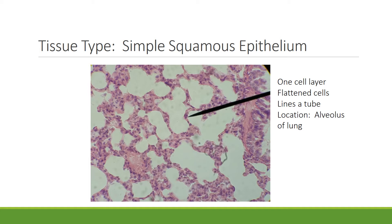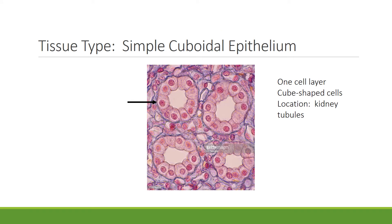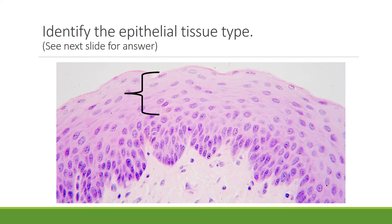One location of simple squamous epithelium is the alveolus of the lung. Can you identify the next type of epithelial tissue? The answer is on the following slide. This is simple cuboidal epithelium — simple because it's one cell layer, cuboidal because the cells are cube-shaped, and the location is kidney tubules. Can you identify the next type? The answer is on the following slide.